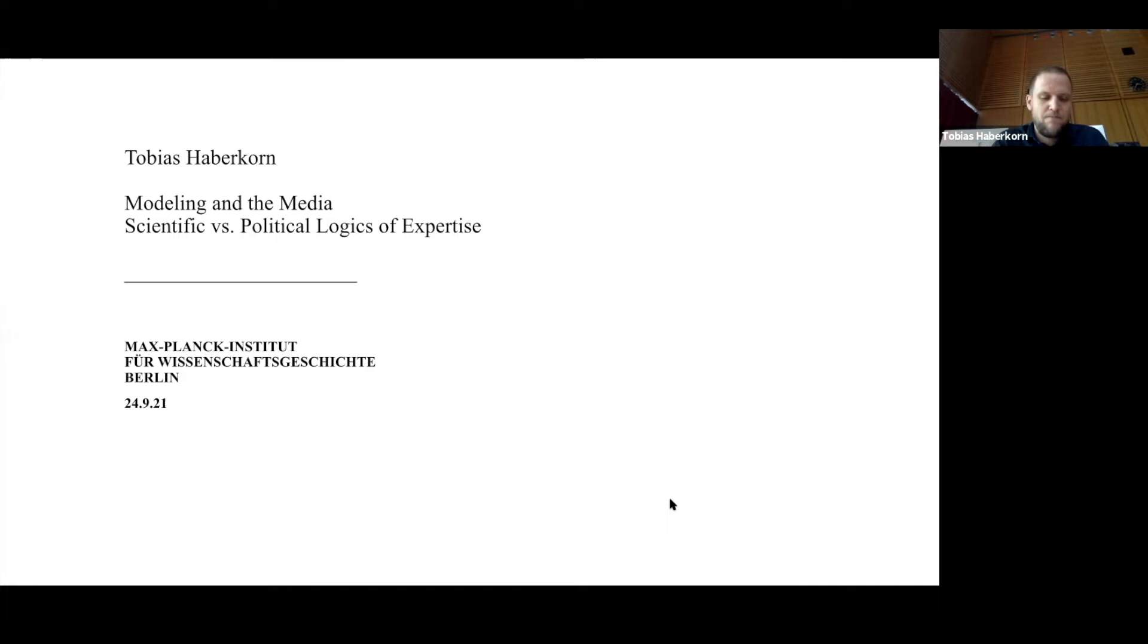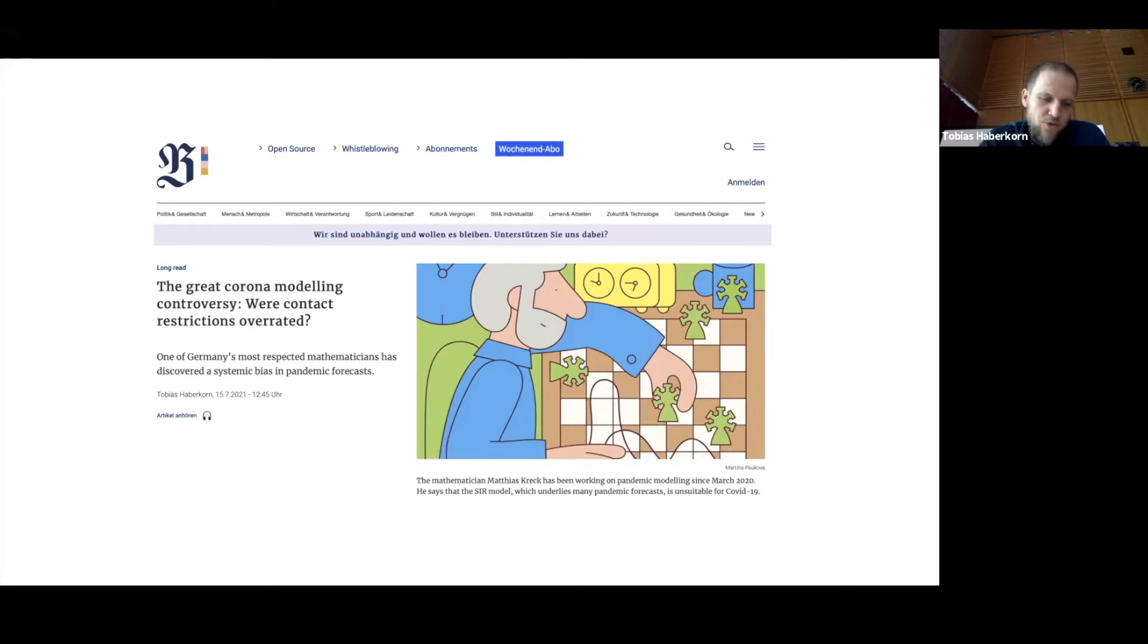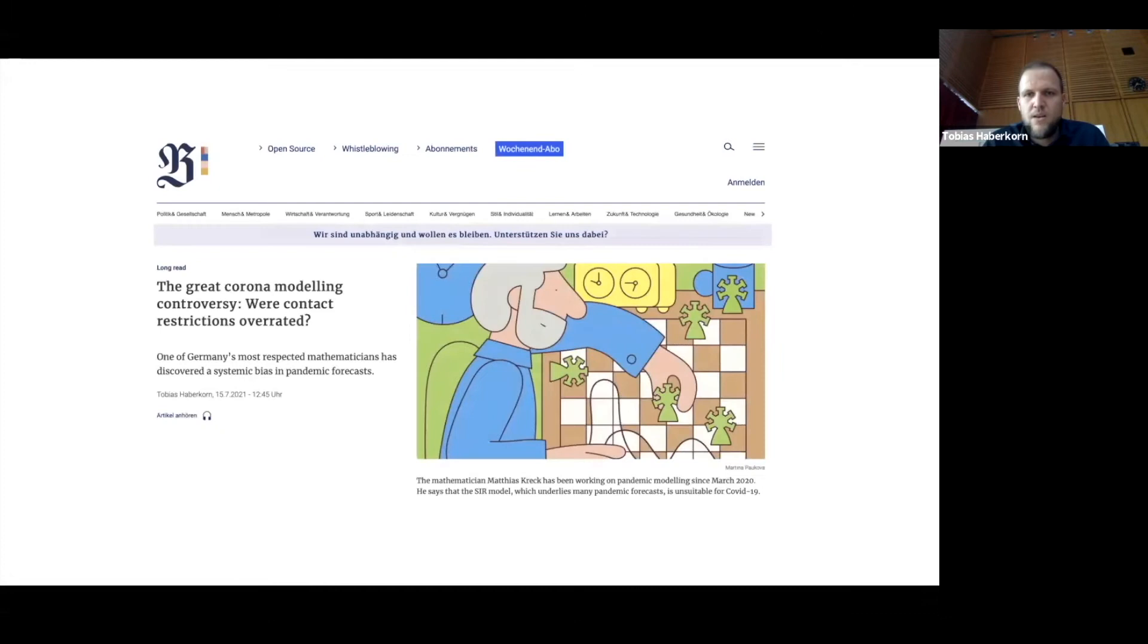In June, I published an unusually long and detailed article in Berlin about a German mathematician called Matthias Kreck. You see a screenshot from the English version of the article. I prepared a link with an unpayable version of it, which I'll post in the chat. Here you go, this is a link to the full version of the article.